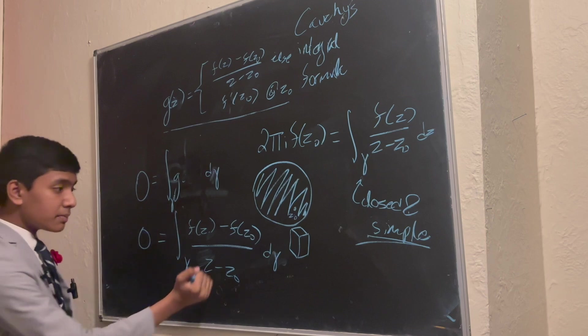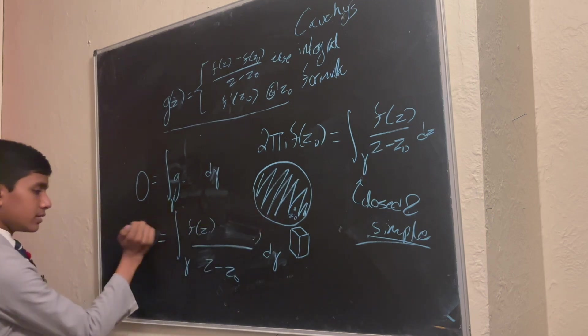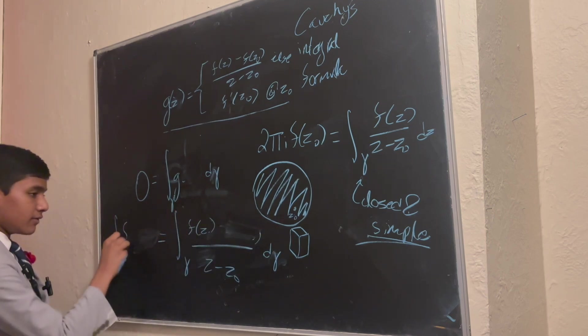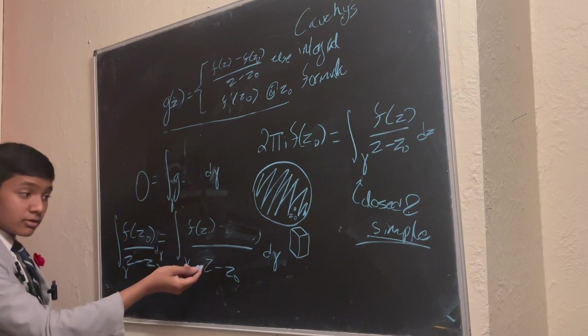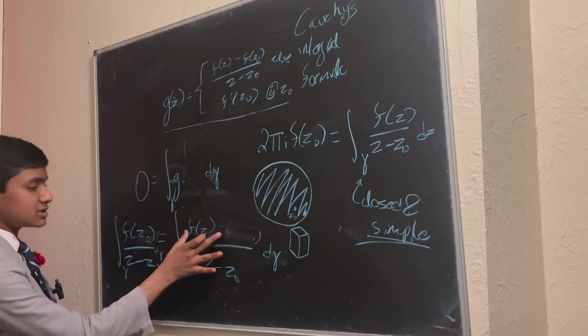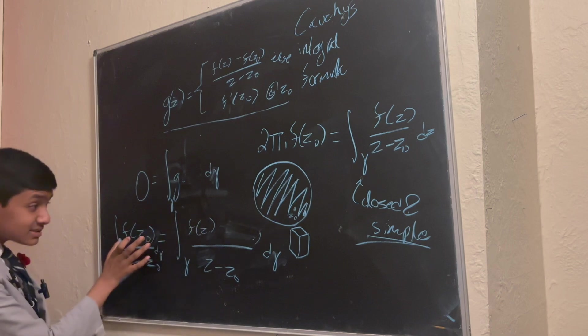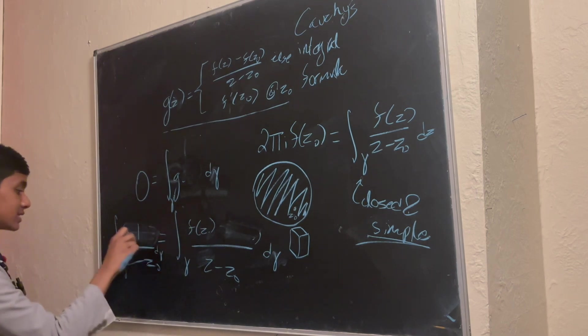And so you can split it up into the integral of f of z0 over z minus z0, and the integral of f of z over z minus z0. This is not a constant, which is sad, but that is a constant, so it comes outside.